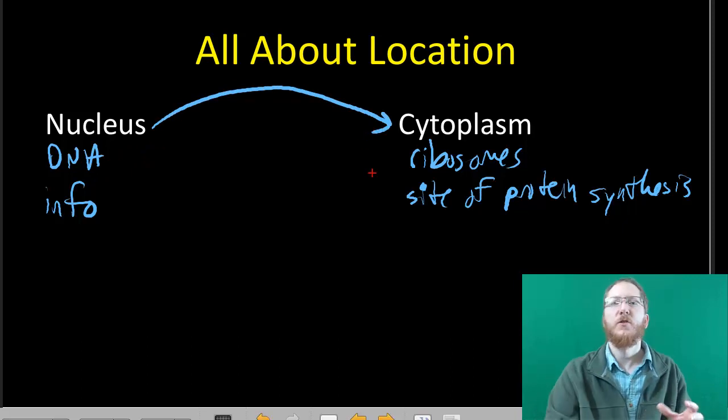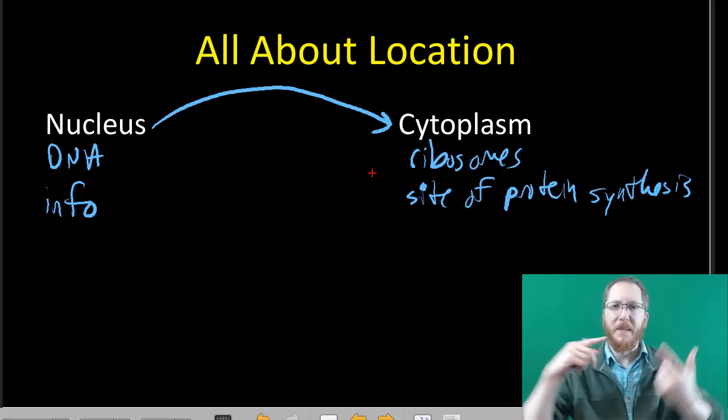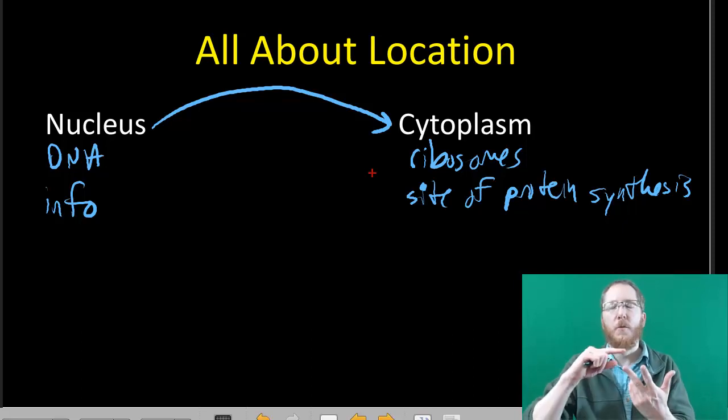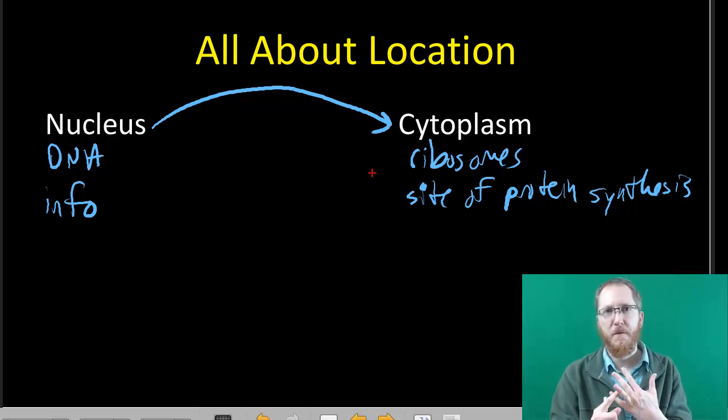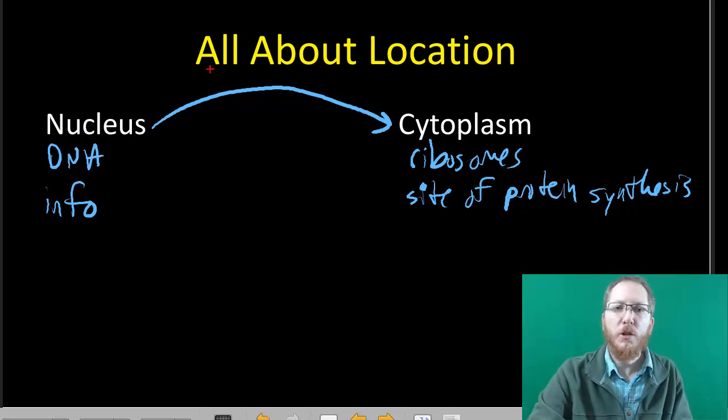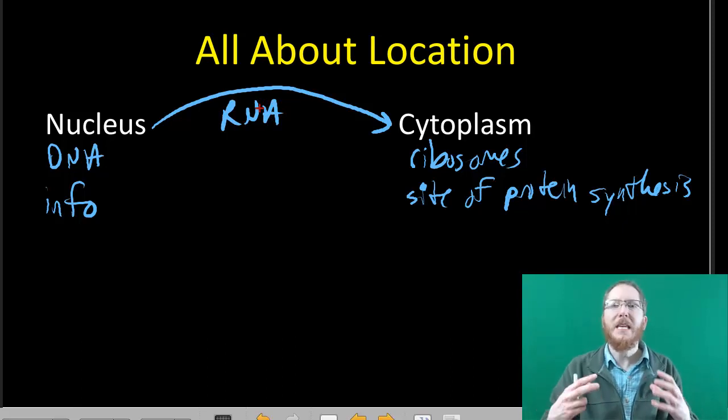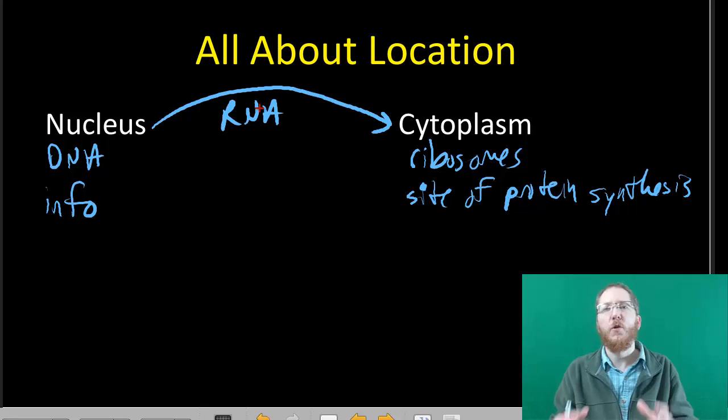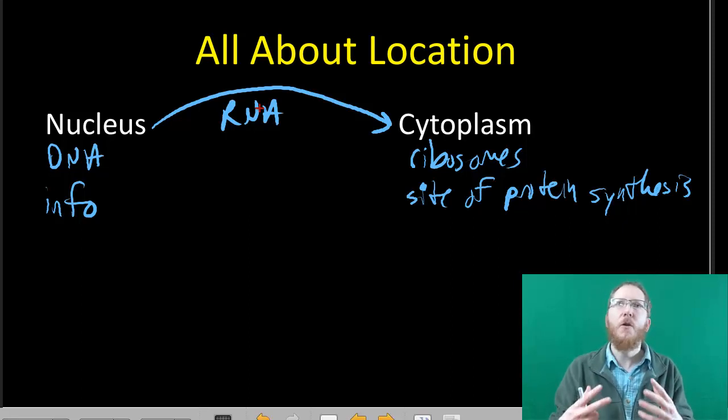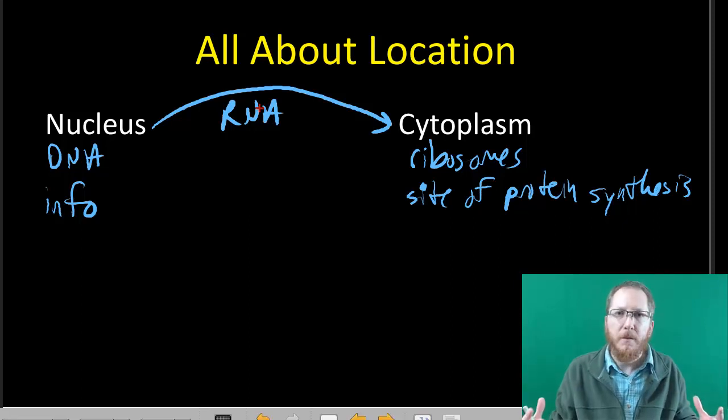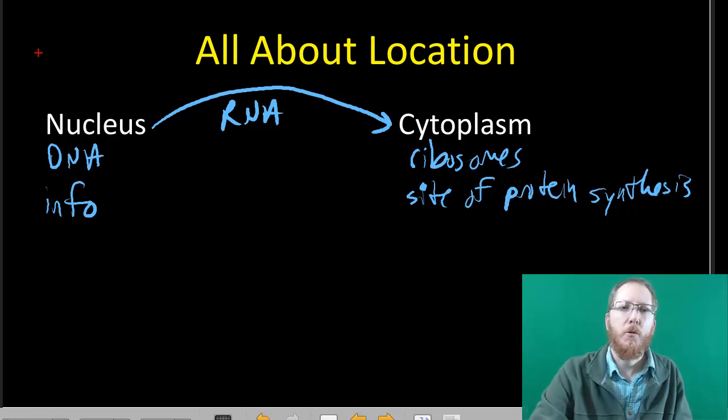We have this gap in location where we have to somehow get this information, get the instructions from the nucleus into the cytoplasm so we can build the proteins that are essential for metabolism, essential for homeostasis, essential for life. So the go-between is going to be RNA. Its job is to take things like information, materials, structure to get those things that we need to the ribosome so we can build proteins. Without RNA this gap in location would be critical.